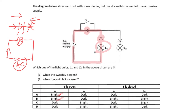Now let's consider the second scenario when switch S is closed. This creates a low resistance path, so current will choose to flow through this wire. With current flowing in the clockwise direction, it bypasses the diode via the low resistance path and flows through this forward-biased diode, passing through light bulb L2 — so L2 will be bright — and continues back to the supply in a closed circuit.